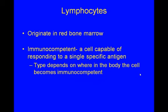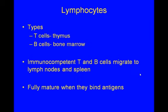Lymphocytes originate in the red bone marrow. Immunocompetent is what we want — that is where a cell is capable of responding to a single specific antigen. The type depends on where in the body the cell becomes immunocompetent. The two types of lymphocytes are T cells, which mature in the thymus, and B cells, which mature in the bone marrow. Immunocompetent T and B cells migrate to the lymph organs and the spleen, where they fully mature when they bind to the non-self antigen and are thus programmed.